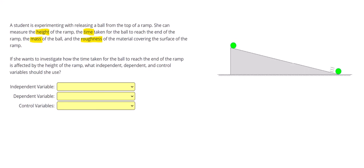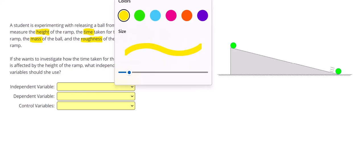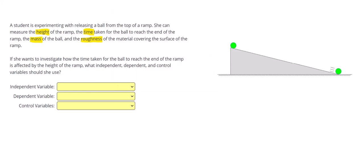So those were our four variables. If she wants to investigate how the time taken for the ball to reach the end of the ramp is affected by the height of the ramp, what independent, dependent, and control variables should she use?